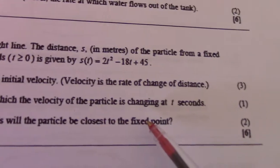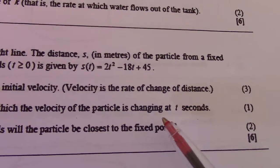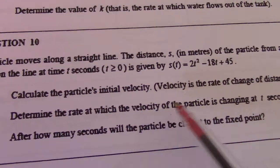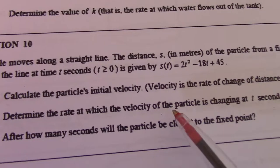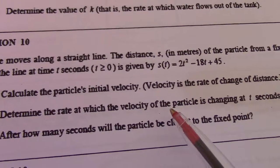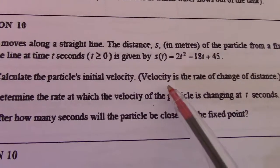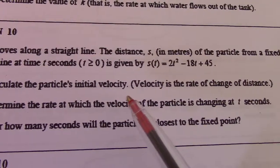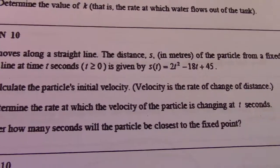10.2, determine the rate at which the velocity of the particle is changing at t seconds. So, we want the rate at which velocity is changing, rate of velocity, acceleration. I assume you know that. That means I have to find the first derivative of velocity or second derivative of displacement or distance in this case.